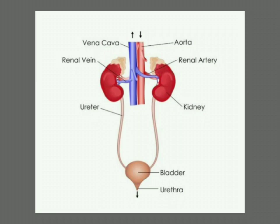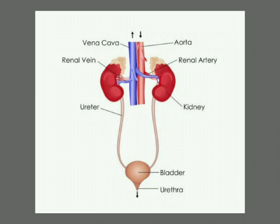The main organ in the excretory system is the kidneys. We have two kidneys on either side of our backbone, and they are in the shape of beans. A pair of bean-shaped organs that remove waste from the blood in the form of urine — that is what kidneys are.